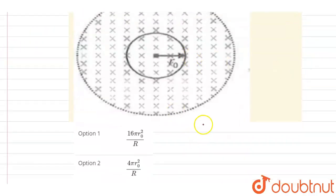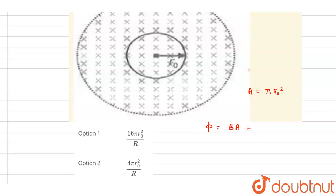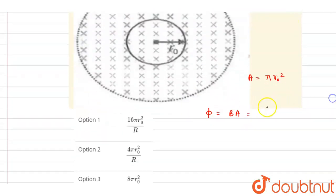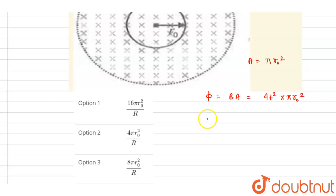The EMF will be induced. If we write down the flux at any instant of time, it will be B into A, where the area of the coil is πr₀². So we can just multiply B and the area: flux = 4t² × πr₀². Differentiating both sides, dΦ/dt gives the induced EMF, which equals 8πr₀²t.